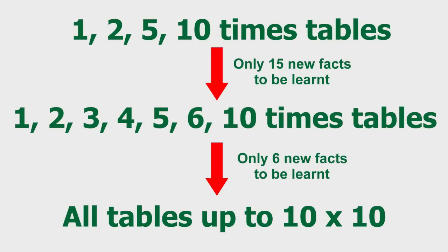These new facts can be learned at the rate of one per day by most children, and we have proved this by extensive testing in schools. And then finally, to get a full knowledge of all tables up to twelve times twelve — the level at which the government says they're going to be tested on — they then only need to learn another nine new facts.